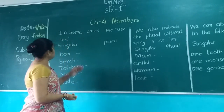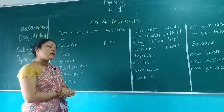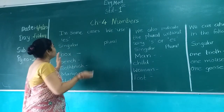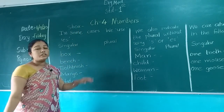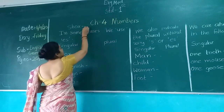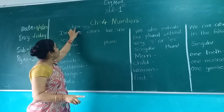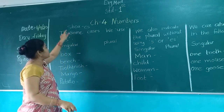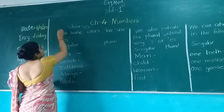Now, next: in some cases we use ES while making plural form. Remember this: S-H-O-X. If the last letter is S, H, O, or X, we have to add ES.